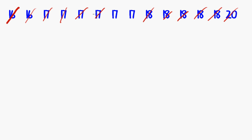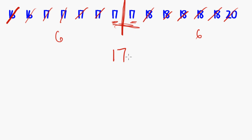I've crossed off six from this side and six from this side. Now I have two numbers in the middle. So I want to split my data right here and know what is halfway between 17 and 17. Well, what is halfway between 17 and 17? It's just 17. So that is the median of that data set.